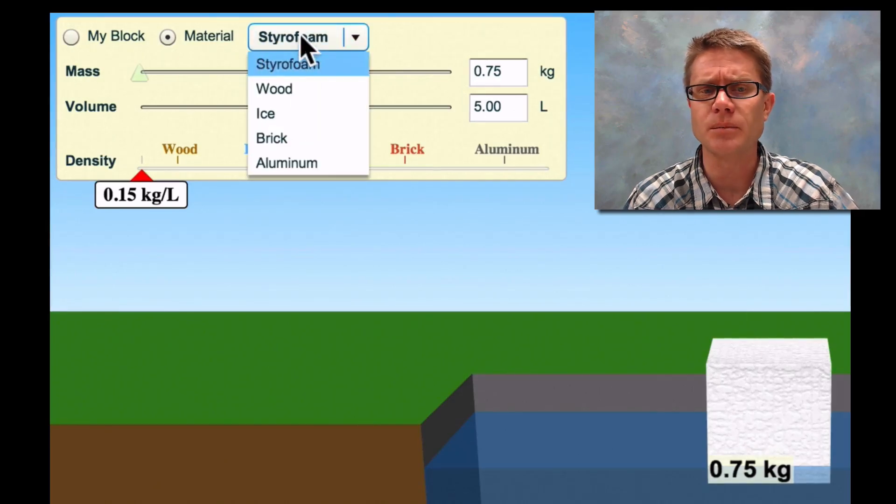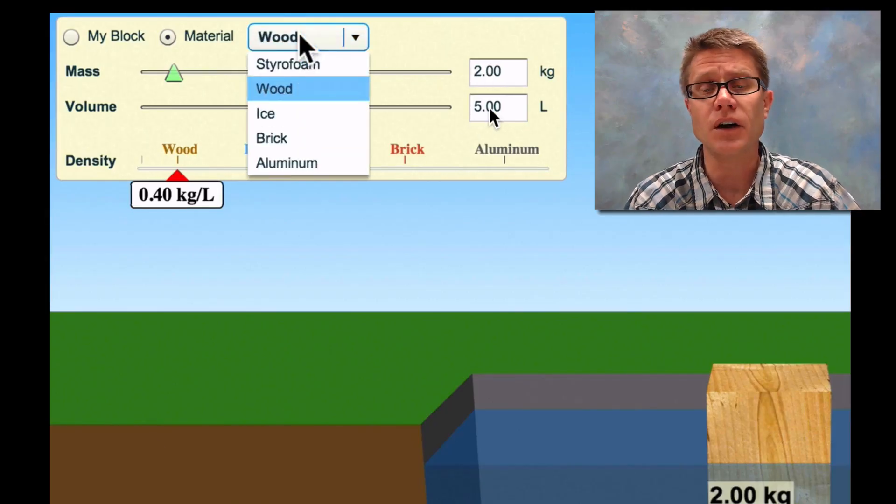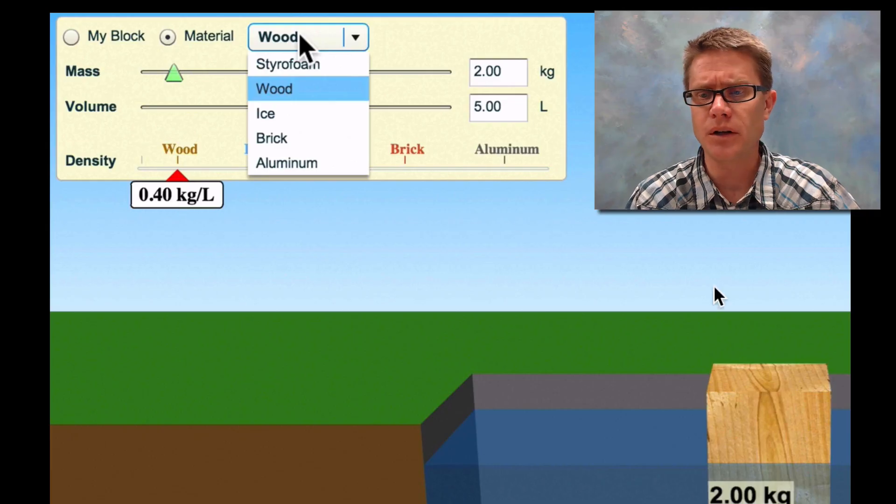Now let's change that from styrofoam to wood. You can see that the volume is staying the same, but the mass, since it's 2 and the volume is 5, we now have a density of 0.4. You'll also see that it's still floating in this water we have to the side.